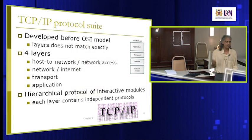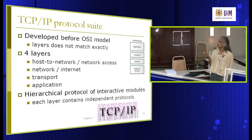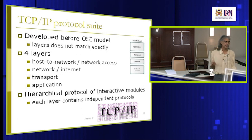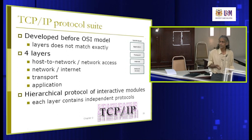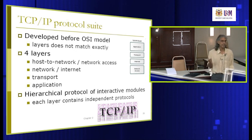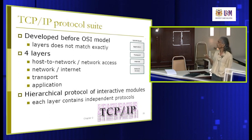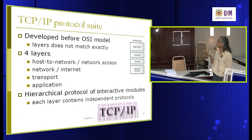Then there is another model, more commonly and widely used: the TCP/IP model. It follows the same principles, just different strategies. TCP/IP and OSI do not match exactly, but there is a good mapping between them since their functions are basically the same. In the TCP/IP model there are four layers instead of seven: network access, internet, transport, and application.